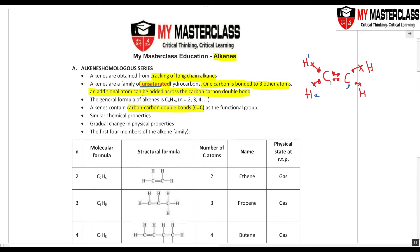An additional atom can be added across the double bond. We have a double bond here, but to hold the two carbons together we don't need a double bond. One of the double bonds will break, so the electrons will come out. Those electrons that are freed can bond with other atoms that have their own electrons. So from a double bond, it can become a saturated hydrocarbon with all carbon-carbon single bonds.